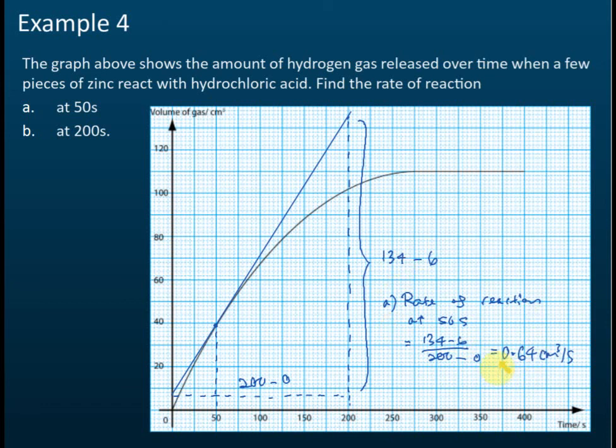So the instantaneous rate or the rate. Usually they won't tell you it's instantaneous rate, but you see the prepositions that they use. If they say at some time, then that is the instantaneous rate. If they say in first minute, second minute or in 60 seconds, then that will be a period of time. Then that's average rate.